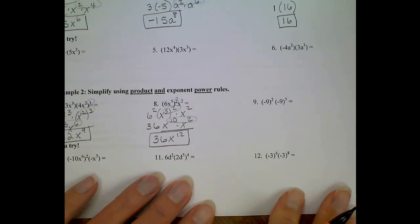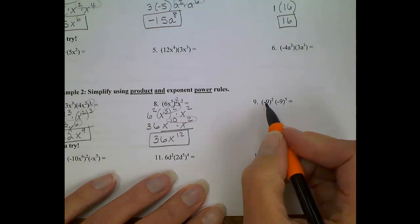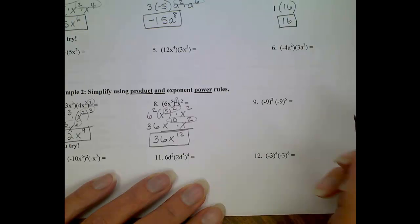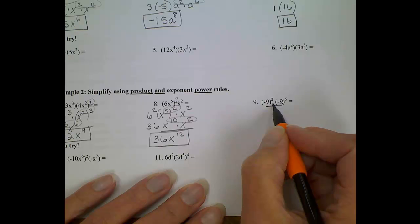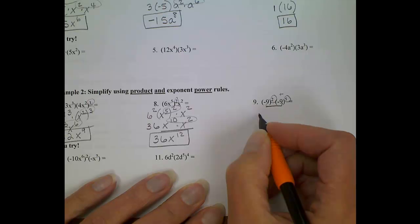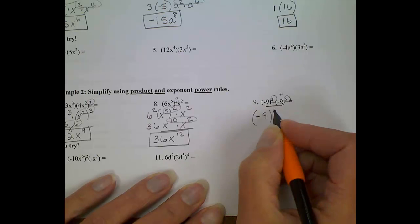Okay, number 9. We have negative 9 in parentheses squared, negative 9 in parentheses to the 5th. Now, even though we're not talking about a variable here, my base is the same. My operation is multiplication, so what do I do with those exponents? When I'm multiplying, I add them. So this is the same as negative 9 to the 7th power.